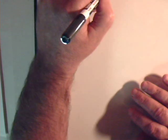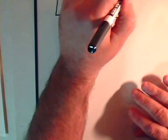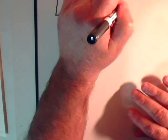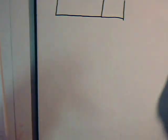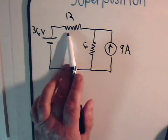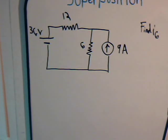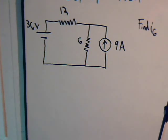Let's try one more example with a current source and a voltage source. We have a 36-volt voltage source, a 12-ohm resistor, a 6-ohm resistor, and a 9-amp current source. We want to find I6, the current through the 6-ohm resistor. To start, we'll eliminate the current source.